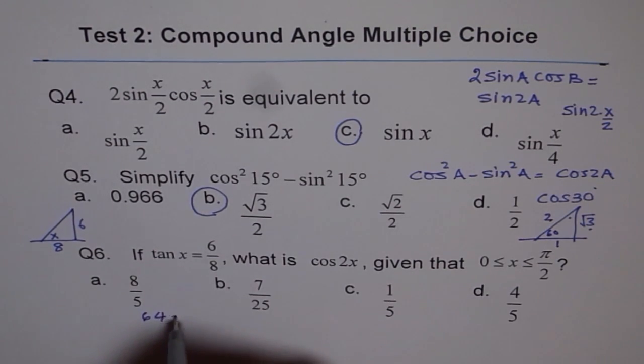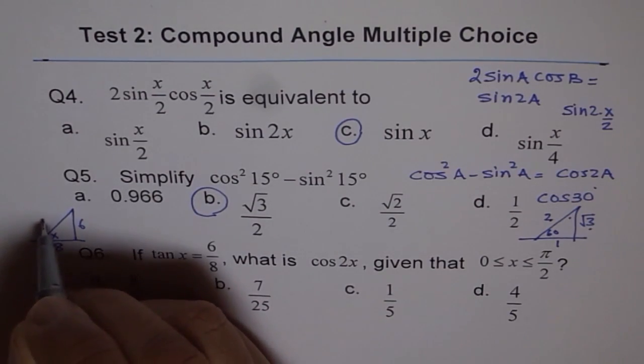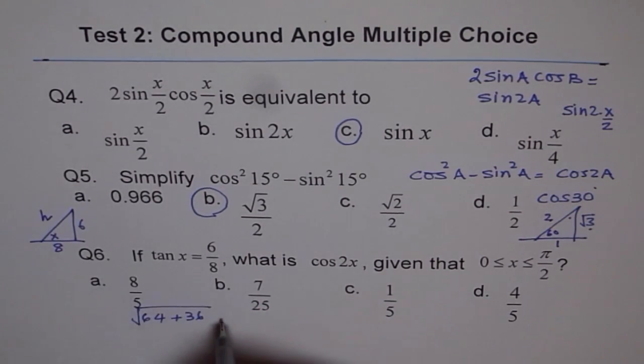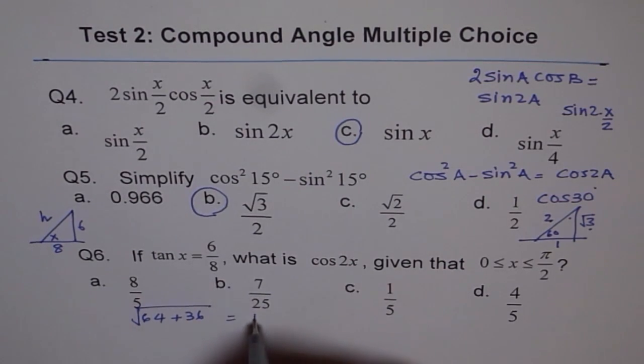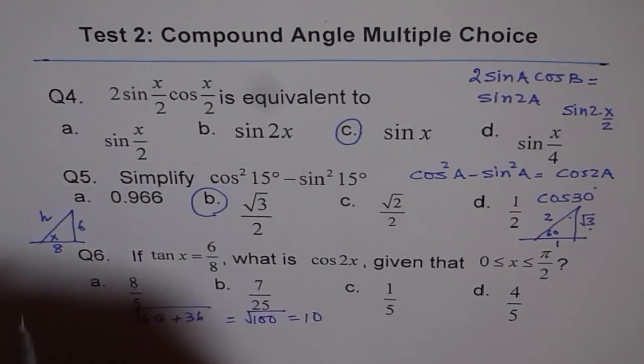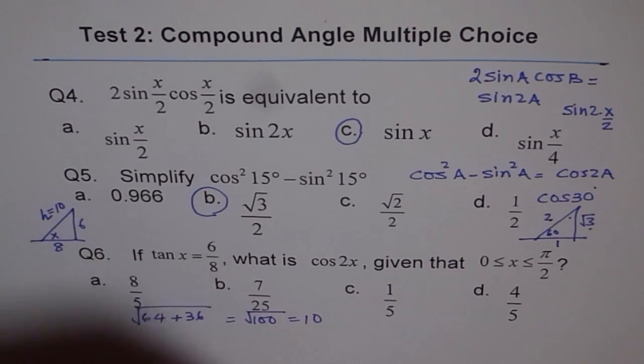We can do it: √(64 + 36), that is hypotenuse. This equals √100. 100 square root is 10, so this equals 10. That is our triangle.